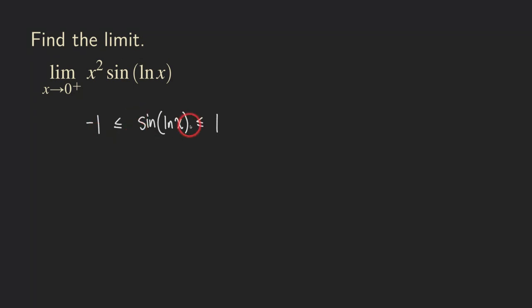All we need to do is multiply every part of this three-part inequality by x squared. Since x squared is non-negative, we can multiply without changing the direction of the inequality symbols. So one times x squared gives x squared on the right, and negative one times x squared gives negative x squared on the left.